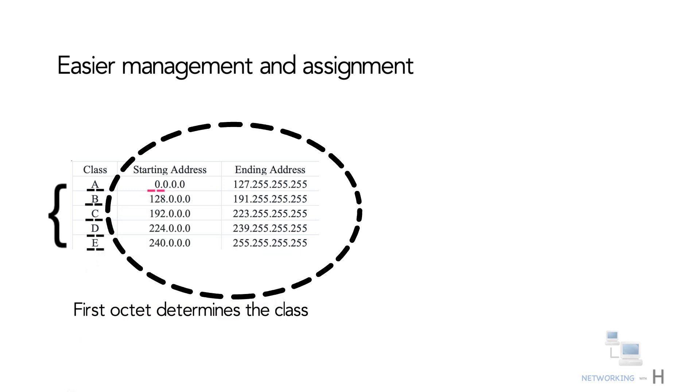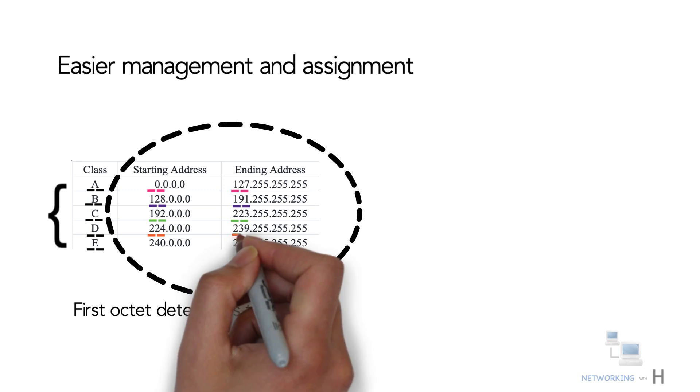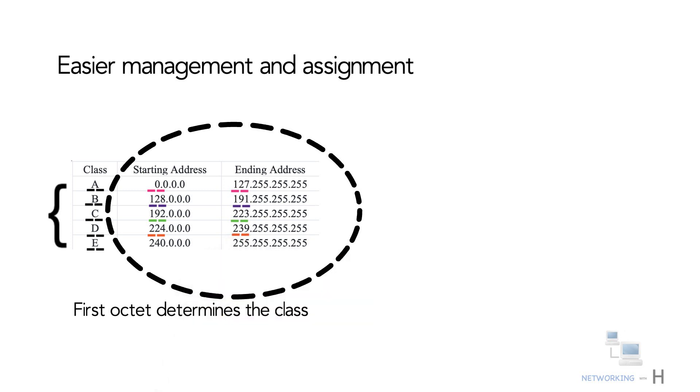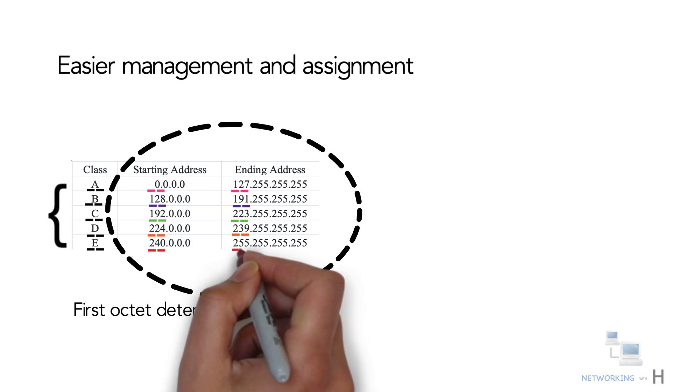128 to 191 determines the Class B IP address range. 192 to 223 determines the Class C IP address range. 224 to 239 determines the Class D IP address range, and 240 to 255 determines the Class E address range.